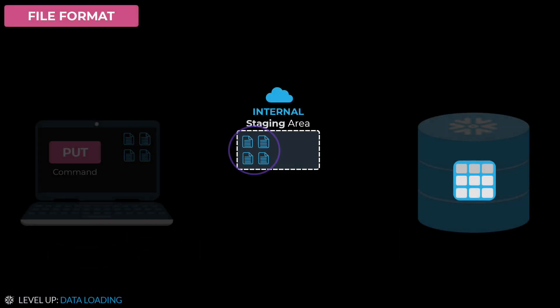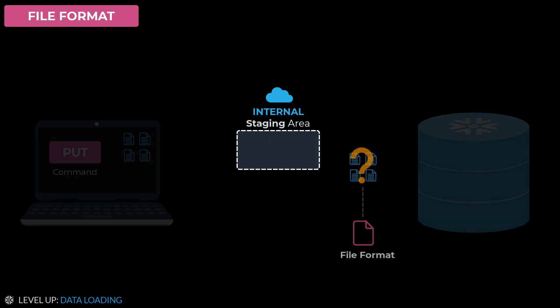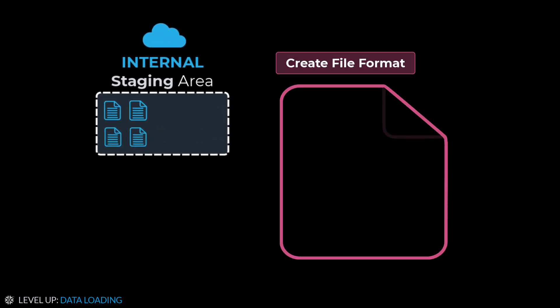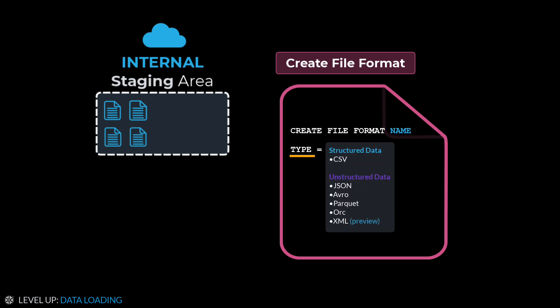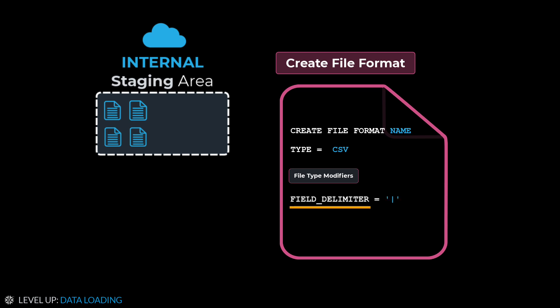Once files are staged, they are now accessible to Snowflake. But before loading our staged files, we can describe to Snowflake how they are formatted, so it can read and properly load the files. We do this using a file format. Using SQL, we write the syntax CREATE FILE FORMAT, give our file format a name, and specify the type. If no type has been specified, the default will be CSV. We can then add file type modifiers, such as setting the field delimiter to the pipe character — the character used to separate records in your data — and set the skip header equal to 2, which will ignore the first two header lines of each file being loaded.